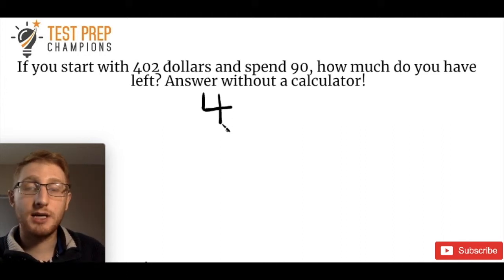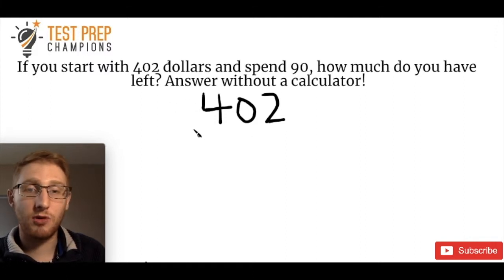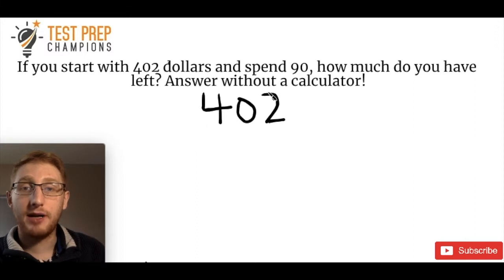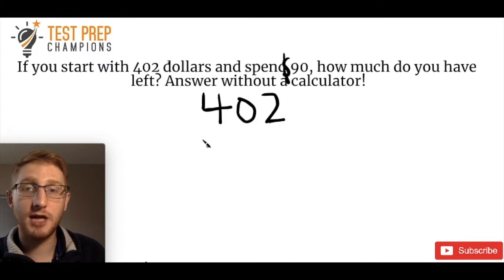What I recommend is to always write this out — this is the same with addition too. Whenever you have addition, subtraction, multiplication, or division, I would always just stack the numbers up on top of each other like this. So we've got $402, and we spend $90. How much do you have left? That's hopefully an indication that we need to subtract, so we want to do $402 minus $90.